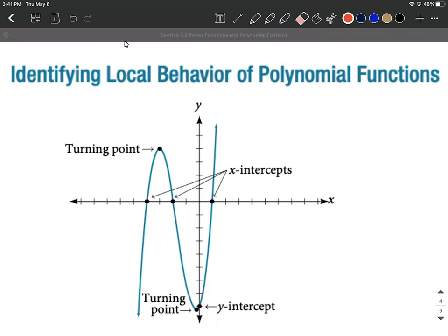So some different characteristics. We have turning points. Turning points is when our graph changes from increasing to decreasing or we get another at the bottom here where we change from decreasing to increasing. You can think of these as being maximums or minimums in a relative sense.